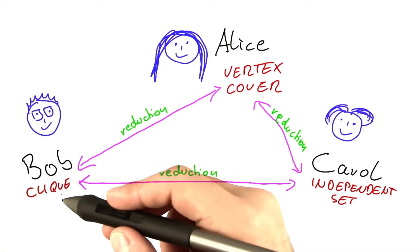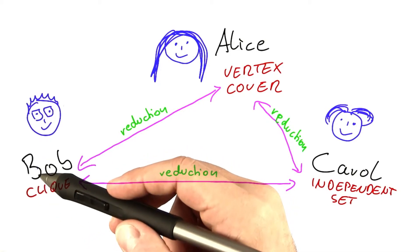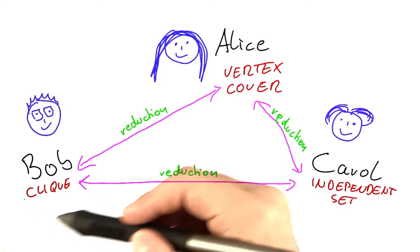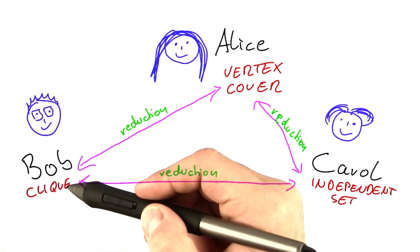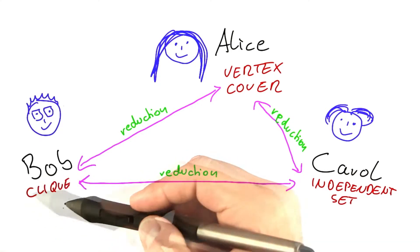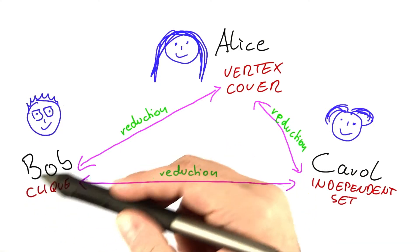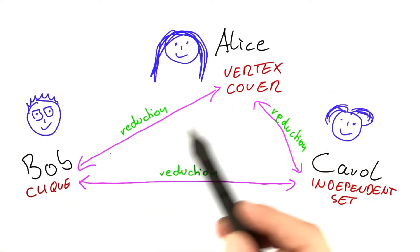And now what we need to show is that for any given instance of SAT, so for any Boolean formula, we can transform it into an input for the CLIQUE problem in polynomial time, such that CLIQUE as a decision problem will say yes if the Boolean formula has a satisfying assignment and no otherwise. And once we achieve this, then we know that CLIQUE is NP complete.